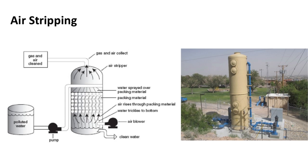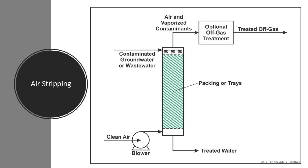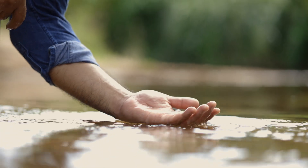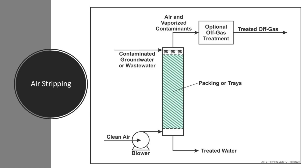Today, we'll be discussing air stripping, a widely used technology for removing volatile organic compounds, VOCs, from contaminated groundwater. VOCs such as benzene, toluene, and trichloroethylene are common pollutants in groundwater due to industrial activities, leaking storage tanks, and improper waste disposal. Air stripping is an efficient and relatively straightforward process that exploits the volatility of these compounds to transfer them from water to air. The goal is to reduce VOC concentrations in the groundwater to acceptable levels for environmental and public health protection. Let's break this process down step by step.